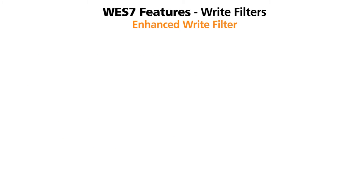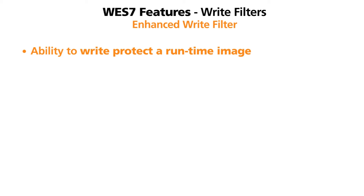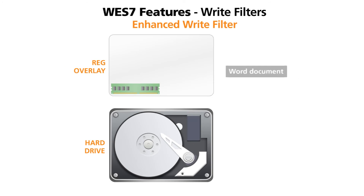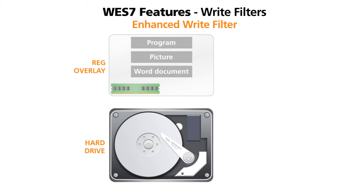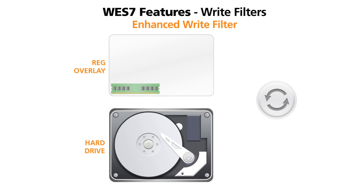The Enhanced Write Filter provides the ability to write-protect a runtime image. With the Amplicon Windows Embedded Standard 7 image installed, the Enhanced Write Filter is designed for a RAM overlay. Specifically, it secures the system at the partition level by preventing writes to disk and redirecting them to an overlay cache in RAM. These writes can be discarded at reboot, thereby restoring the system to a known workable state.